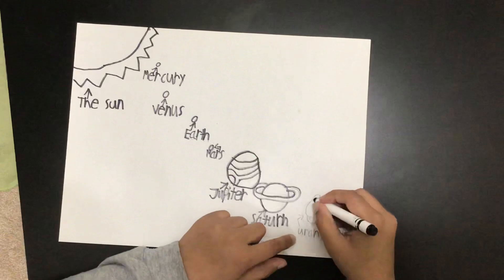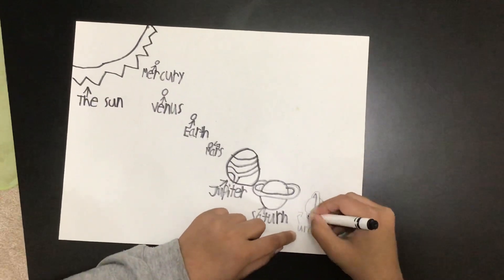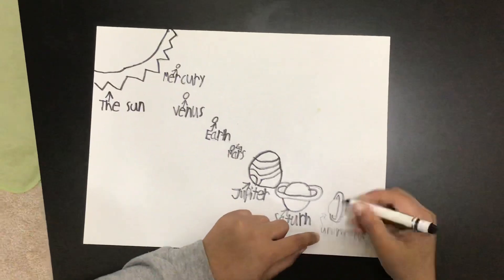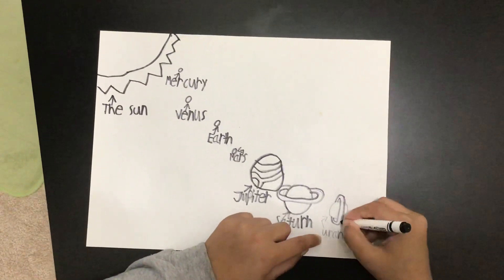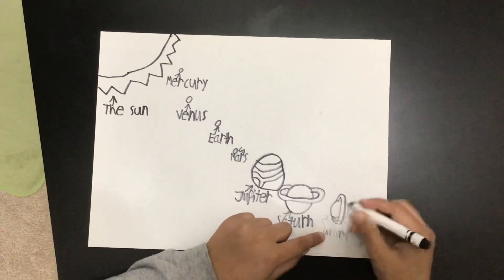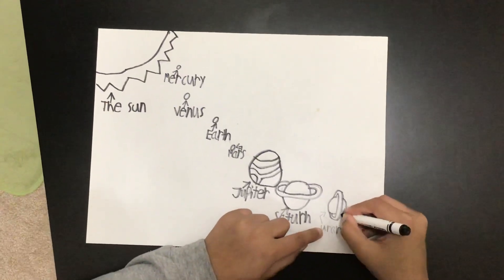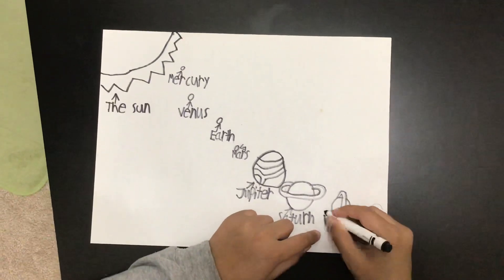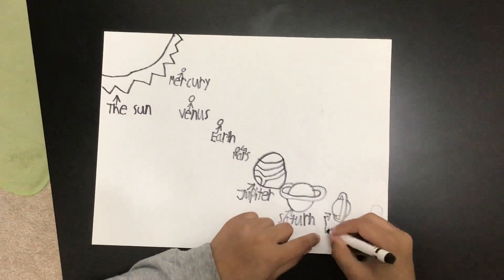This is the second largest planet. Its name is Uranus. People say it smells very bad. That is because its atmosphere is made of nitrogen and other gases that makes it stinky.